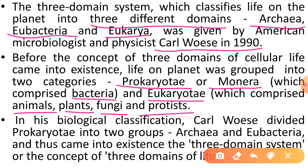Carl Woese ne Prokaryota ko do groups mein tod diya aur Archaea aur Eubacteria do alag Domains bana diye. Baaki bache chaar kingdoms ko Carl Woese ne ek alag Domain mein rakh diya, jise naam diya gaya Eukarya. Is prakar Three Domains System of Life existence mein aaya.